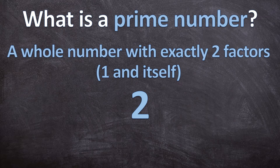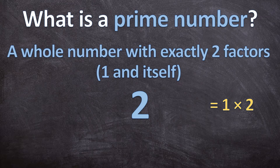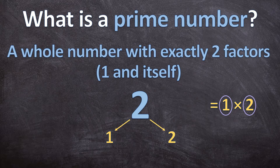Let's look at 2. What whole numbers can you multiply together to have 2 as an answer? So 1 times 2 will be 2. There's nothing else you can multiply to also have an answer of 2. So those are our only two factors. So 2 has two factors: 1 and itself 2. So 2 is a prime number.